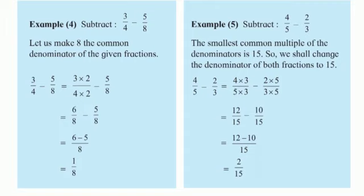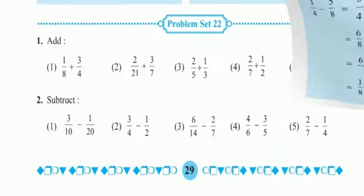In this way you have to do subtraction of unlike fractions — first convert into like fractions where both denominators are equal, then do addition or subtraction. Now let us solve problem set 22 which is on page number 29. In the first question — add — I am going to solve the first, second, and third. In the second question — subtract — I will solve first, second, and fourth. The remaining ones you have to solve on your own.